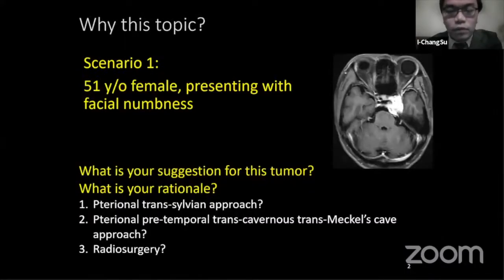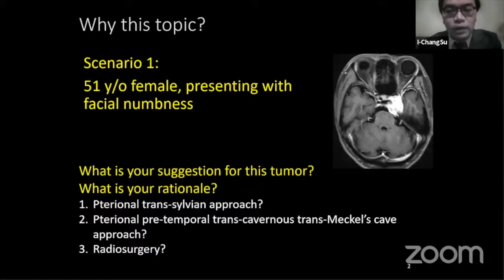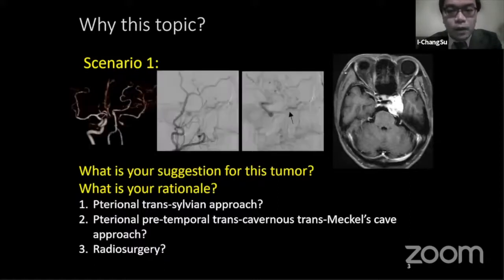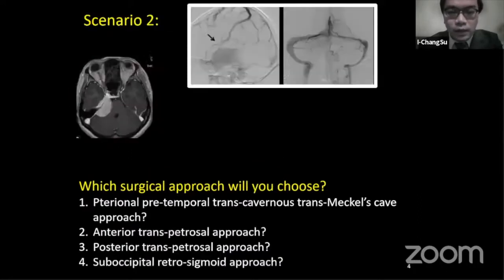Let's start from two clinical scenarios. In this first case, the patient had a cavernous sinus meningioma at the left side. Which treatment or surgical approach will you choose based on this MR imaging? If I gave you these angiographic pictures, will you change your treatment plans? And let's look at the second case. The patient had a petroclaval meningioma at the right side with this venogram.